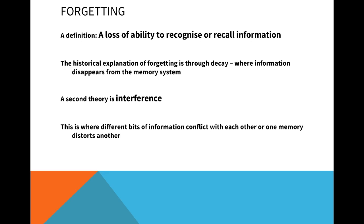So when we talk about interference, the definition is where different bits of information are conflicting with one another, or where one memory is distorting the other. You've got two separate memories competing, and you're picking out the wrong bits of information. That's interference — where different memories are having an effect on one another, resulting in incorrect recall or forgetting.